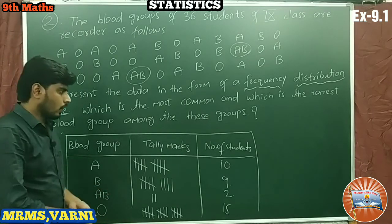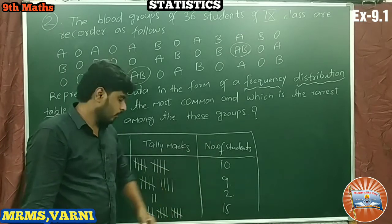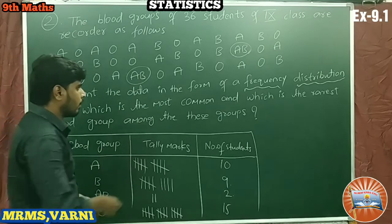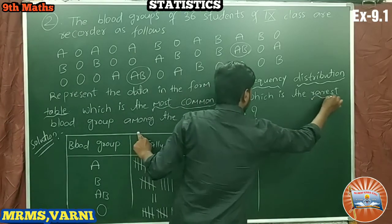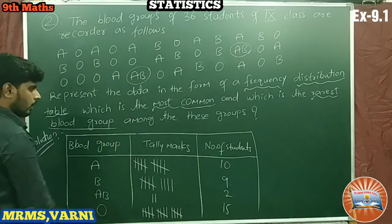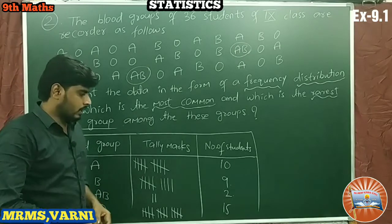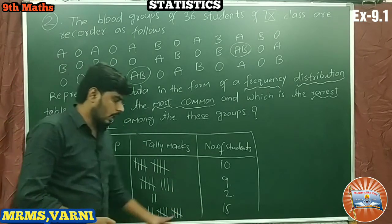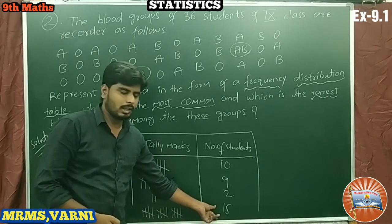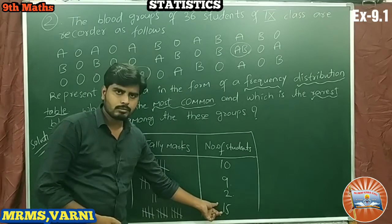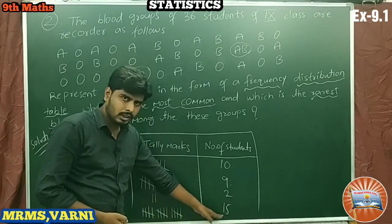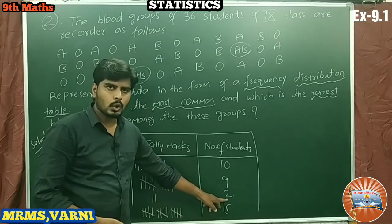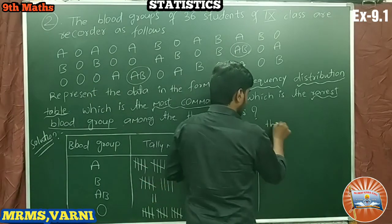This is the required frequency distribution table. The number of students represents the frequency. Now we have to find the most common and rarest blood groups. The highest frequency here is 15, which means O blood group is the most common one because 15 members have the O blood group. The rarest is AB because only 2 members have the AB blood group.